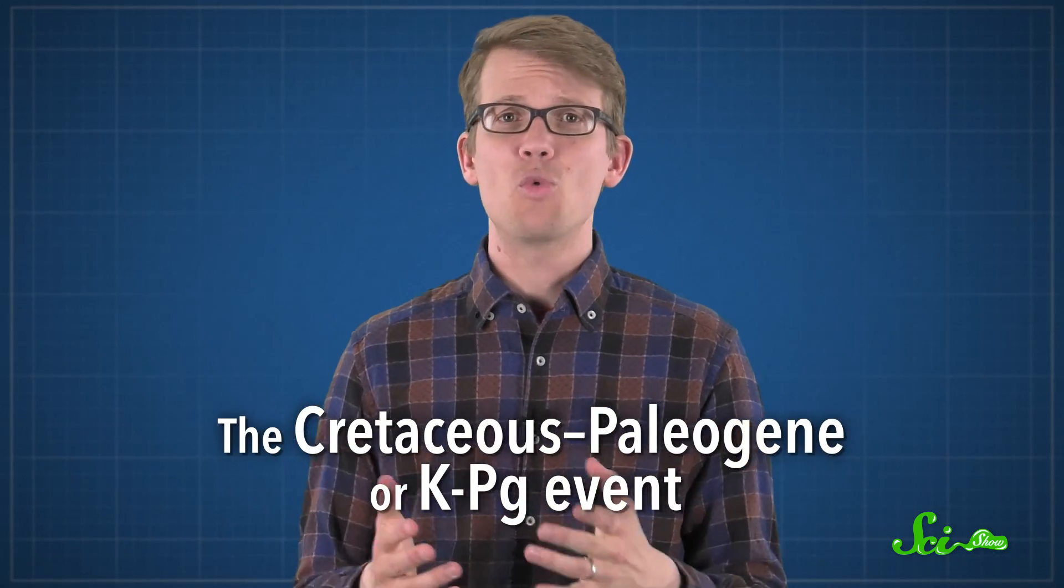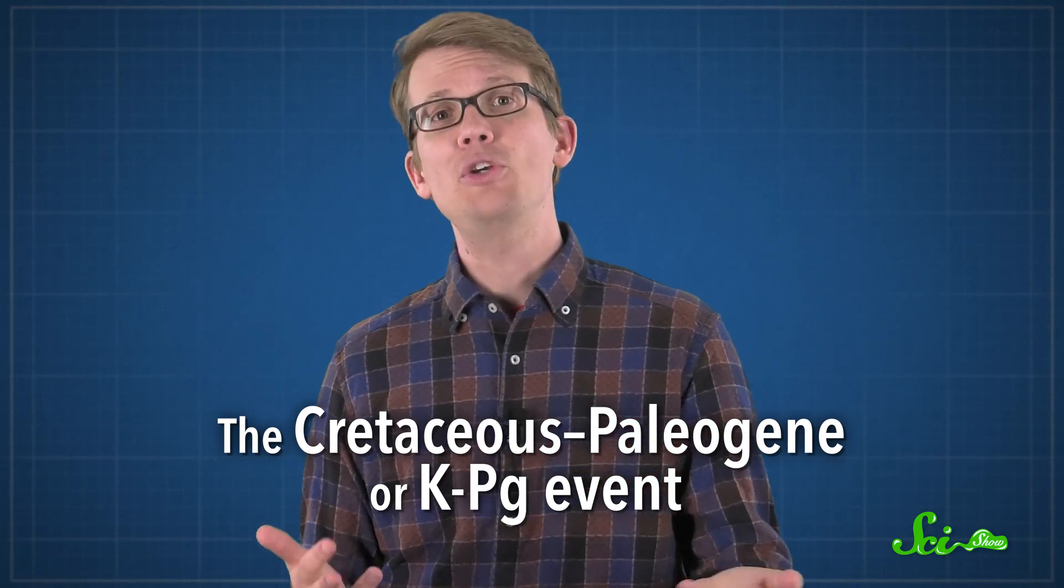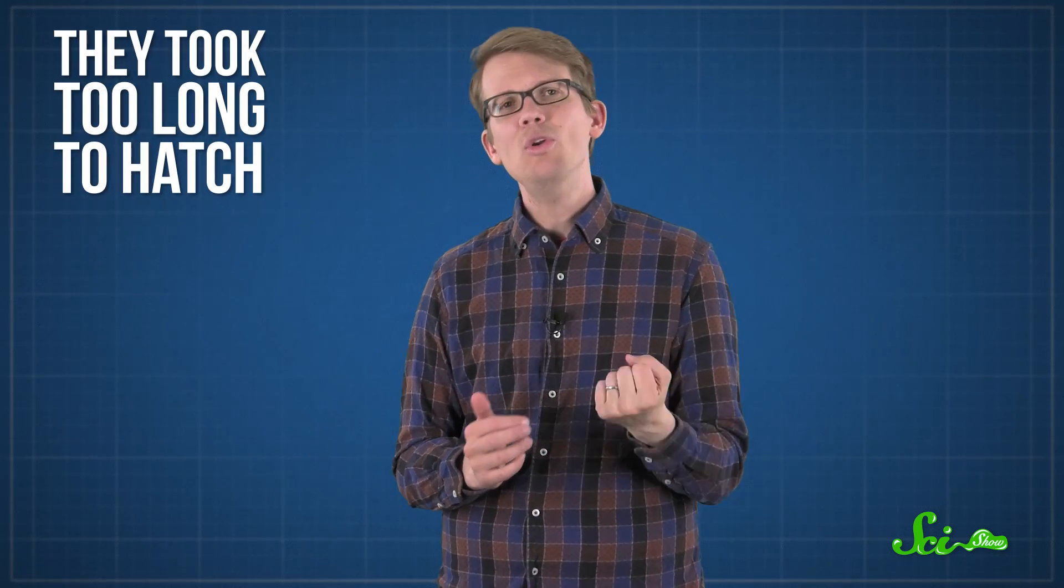And finally, besides how they looked, paleontologists also want to know how dinosaurs lived and died. This includes the mass extinction 65 million years ago, which wiped out all dinosaurs except a few, the avian theropods that live among us today as birds. But it turns out something about the very start of dinosaur lives might have been partly responsible for the end. They took too long to hatch.